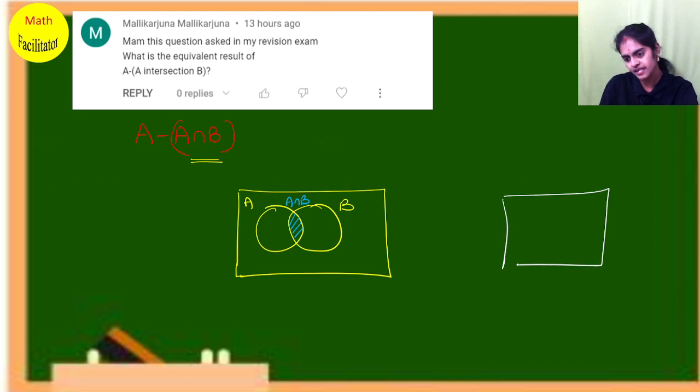If I want to find A minus B, with set A and set B, A minus B means you consider all elements of A and remove the common elements of A and B. What are the common elements? This part. So you remove that and take all the other elements of A. This is your A minus B - only this part.